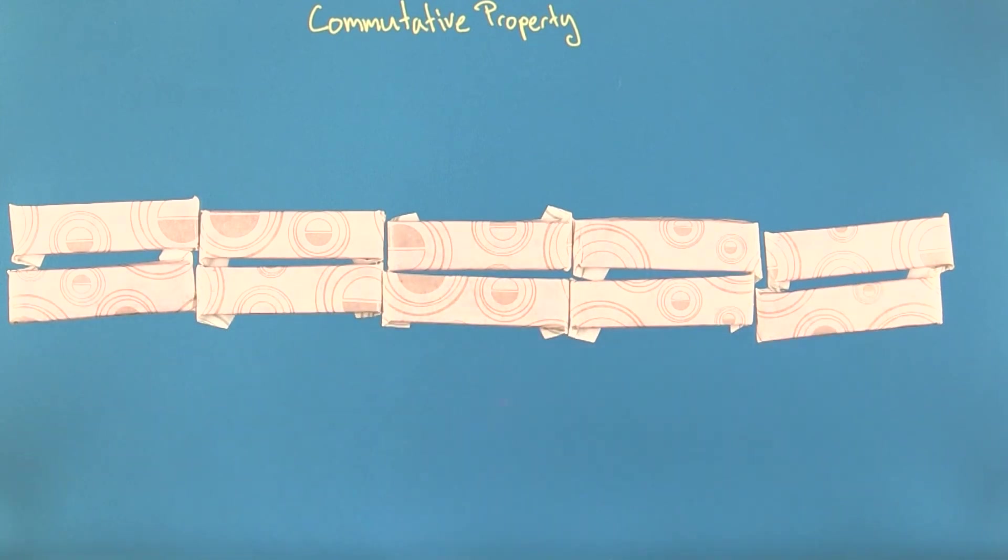See, five columns, one for each pack, and two rows, one for each piece. I still have ten pieces of gum. They're just arranged differently.